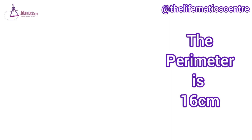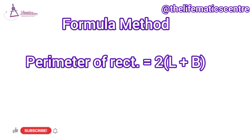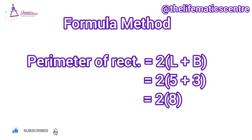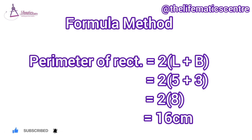Let's confirm using the formula method. The perimeter of a rectangle is 2 times (L + B). That's 5 plus 3. Add 5 and 3, that's 8. 2 times 8 will give us 16 cm, which is the same as when we counted the sides.